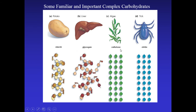Cellulose is a complex carbohydrate with a straight-chain structure. Due to this straight-chain arrangement of glucose units, it is very strong and provides support. It is a structural carbohydrate located in the cell walls of plant cells. Chitin is similar — it also has a straight chain of glucose with an additional chemical group attached. Chitin is another structural carbohydrate, found in the exoskeletons of insects.